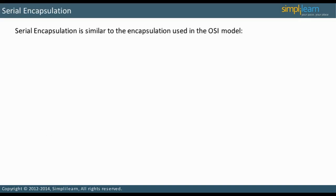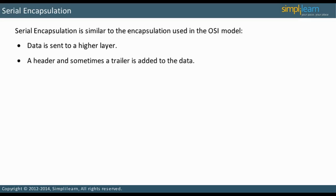Serial encapsulation is similar to the encapsulation used in the OSI model as data is sent to a higher layer. A header, and sometimes a trailer, is added to the data. Let us look at PPPoE as an example. The PPP frames are encapsulated within an Ethernet Layer 2 header and trailer. This allows the PPP frame to be sent over an Ethernet network. Normally, PPP is used with serial interfaces.